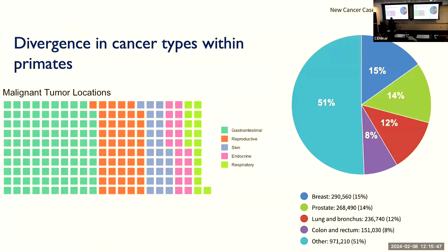Looking at common cancer types more deeply — digging into solid tumors — on the right-hand side we have some of the common human cancer types: breast cancer, lung cancer, colon cancer. Those three cancers alone describe the vast majority of diagnosed human solid tumors. But when you look at solid tumors in primates, you get a very different portrait. You still get a lot of skin cancer. One hypothesis is that our loss of body hair in evolutionary time drives a wild increase in skin cancer, or otherwise an environmental mismatch. But even in primates, they have a pretty high proportion of skin malignancies. The vast majority of their diagnosed solid tumors were gastrointestinal.